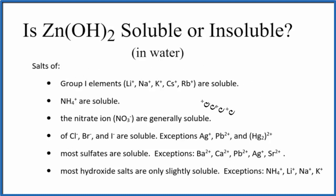There's a few ways we could know that. We could have memorized the solubility rules, and as we go down the rules here, most hydroxide salts are only slightly soluble. This is a hydroxide group here, this OH, bonded to this metal. Most hydroxide salts are only slightly soluble, with a few exceptions. Zinc isn't one of our exceptions, so we would think that zinc hydroxide would be slightly soluble in water.